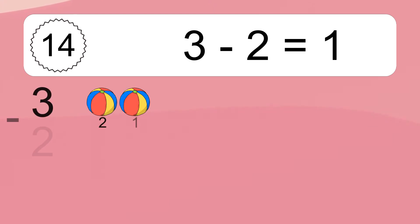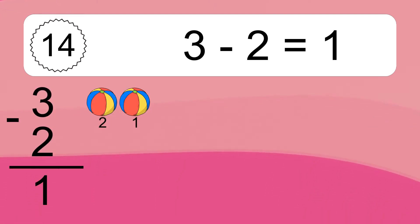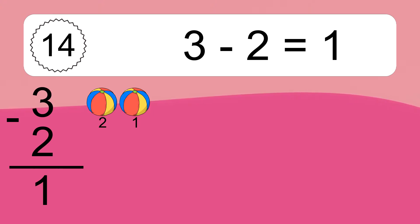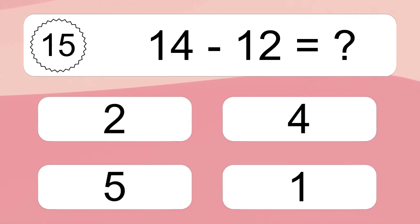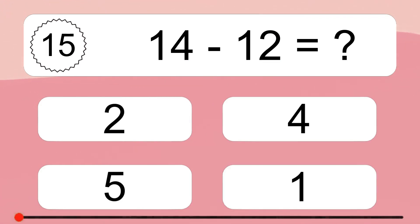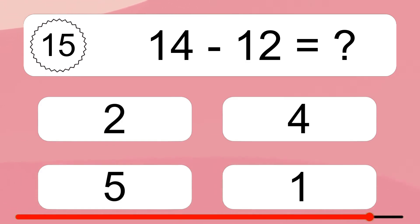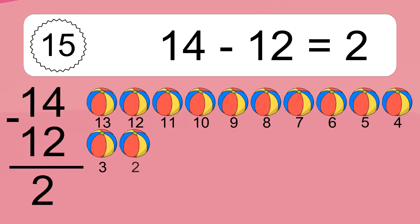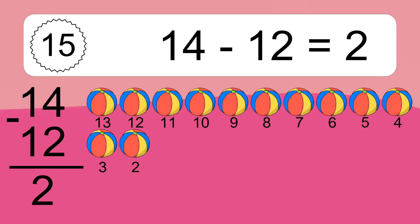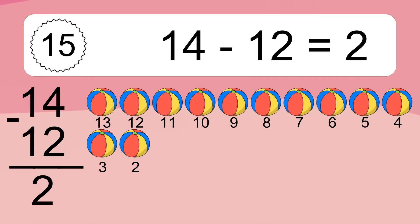3 minus 2 equals what? 3 minus 2 equals 1. Let's count it. 2, 1. 14 minus 12 equals what? 14 minus 12 equals 2. Let's count it. 13, 12, 11, 10, 9, 8, 7, 6, 5, 4, 3, 2.